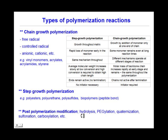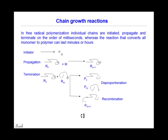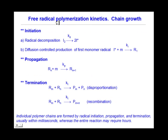Post-polymerization modifications include hydrolysis, regulation, quaternization, and sulfonation. In chain growth reactions, as in free radical polymerization, individual chains are initiated, propagate, and terminate in the order of milliseconds, whereas the reaction that converts all monomers to polymers can last hours. The steps include initiation — composed of initiator decomposition followed by diffusion-controlled production of the first monomer radical — then propagation, producing the polymer chain, and finally termination, either by disproportionation or recombination.